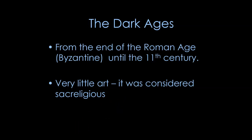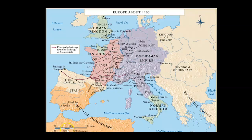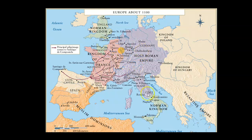The Byzantine era happened down near Turkey — you can see where it says 'Byzantine era,' that was where Constantinople was, and all those churches we looked at last week. Now we're back up here in what we consider the main part of Europe. Notice it looks a little different — the Roman Empire is in a different place. We now have these Norman kingdoms, but basically we're covering all of this green, pink, and purple area on the map.